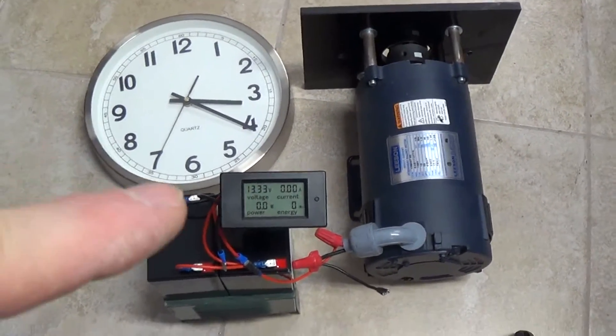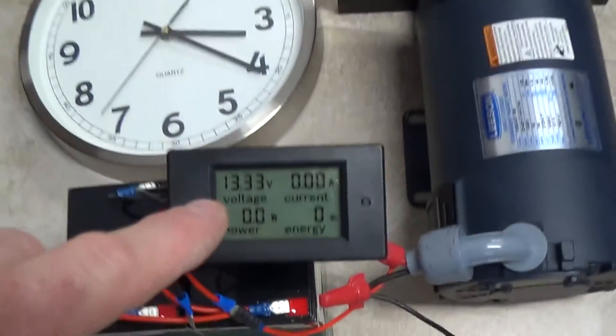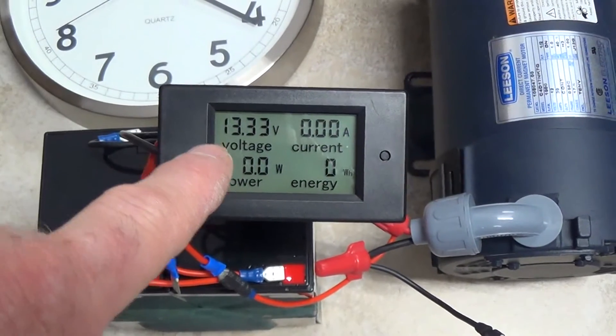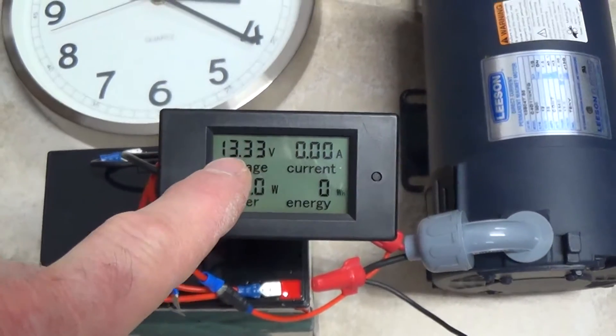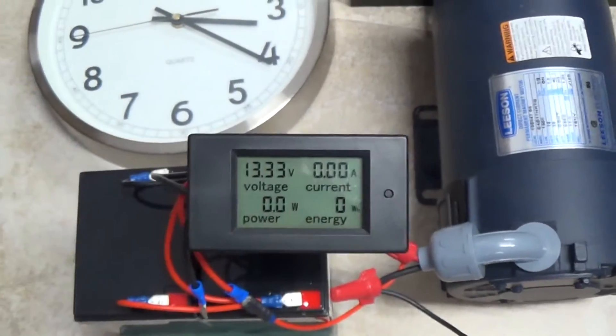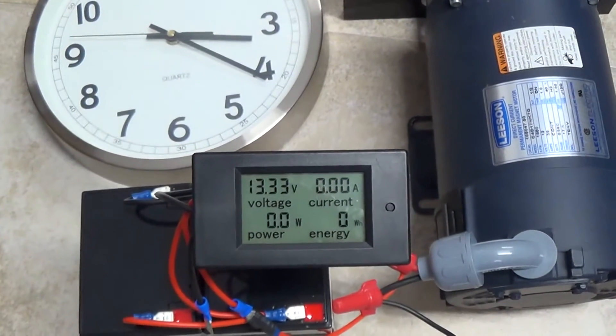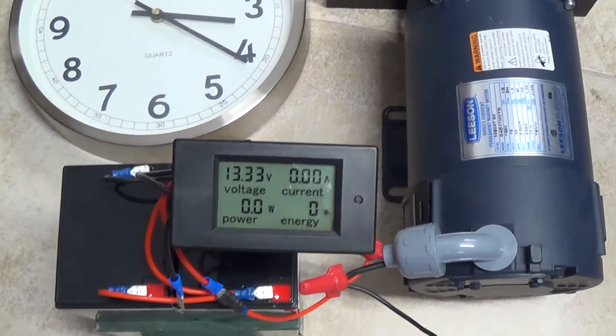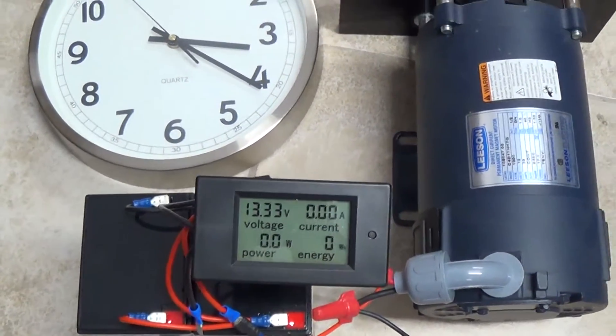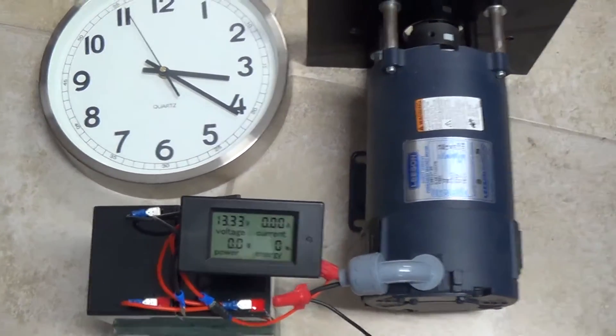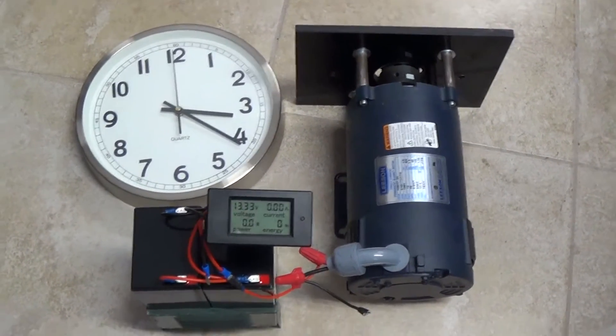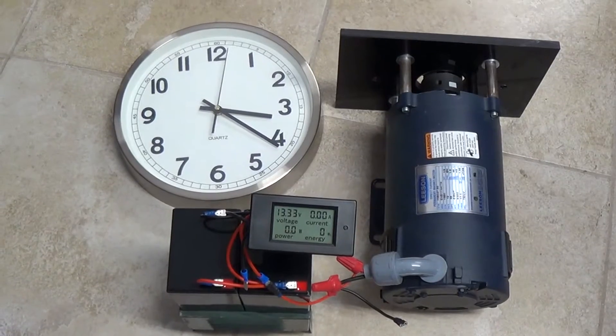I think once we get down to about 10 volts, I'm going to stop the test, and that's where we're going to determine what the baseline is of this motor. At 10 volts under load, I would say the batteries would be pretty well discharged at that point. Then we'll redo the same test in the other configuration.